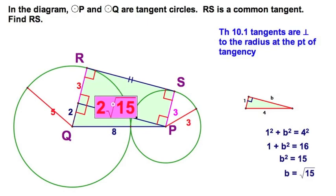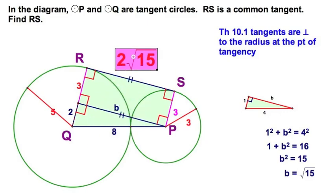And therefore, since the original figure I constructed a rectangle, b is congruent to this segment RS, and the segment RS must have a measure of 2 radical 15. A lot going on there, so play this one over a couple times. Make sure you know it for the test.